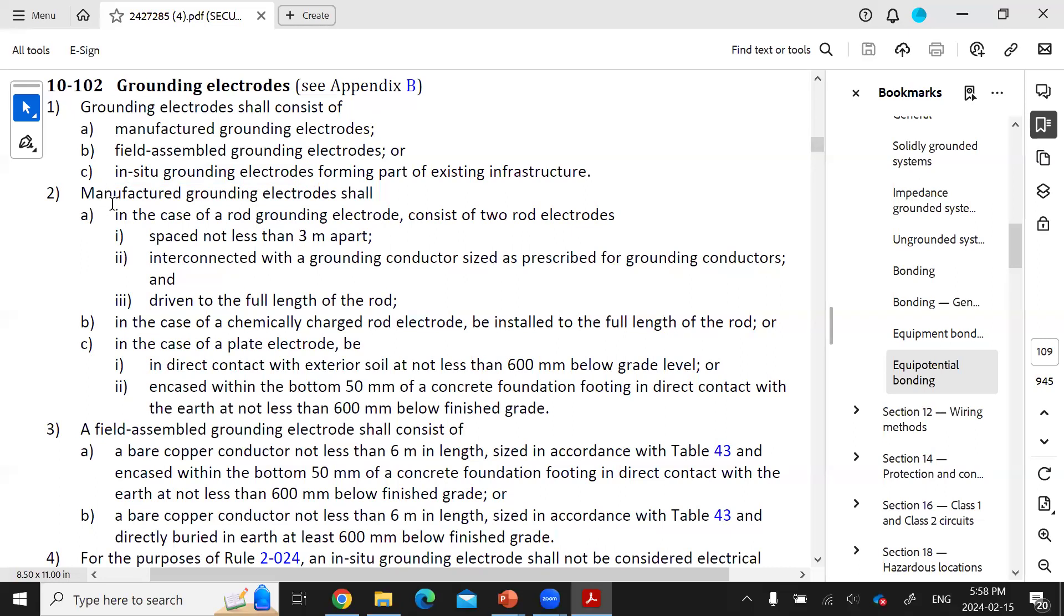Section 2 of Rule 102 says that manufactured grounding electrode shall, in the case of a rod grounding electrode, consist of two rod electrodes that are not spaced more than three meters apart. Those rod electrodes have to be at least three meters long and also driven into the earth to their full length and spaced no longer than three meters apart, so they don't interfere with each other.